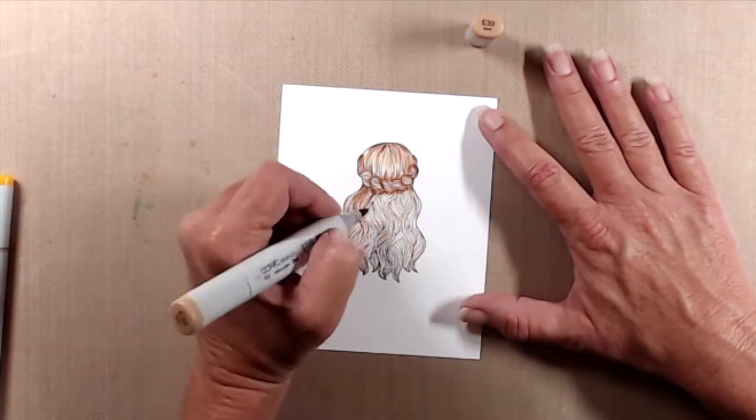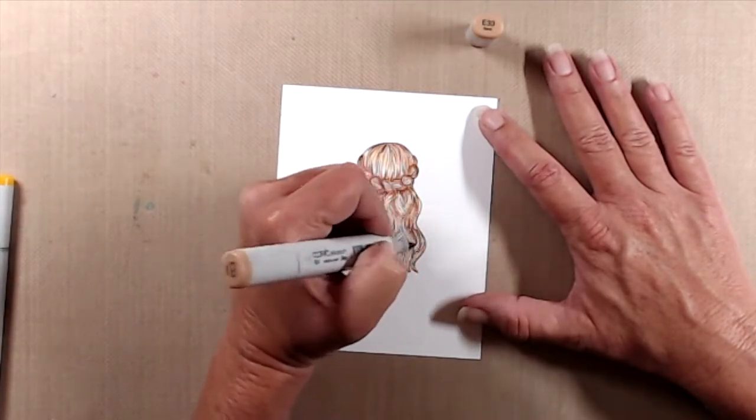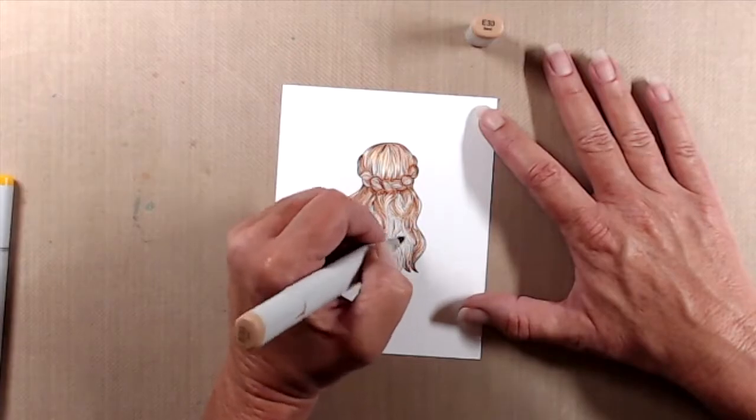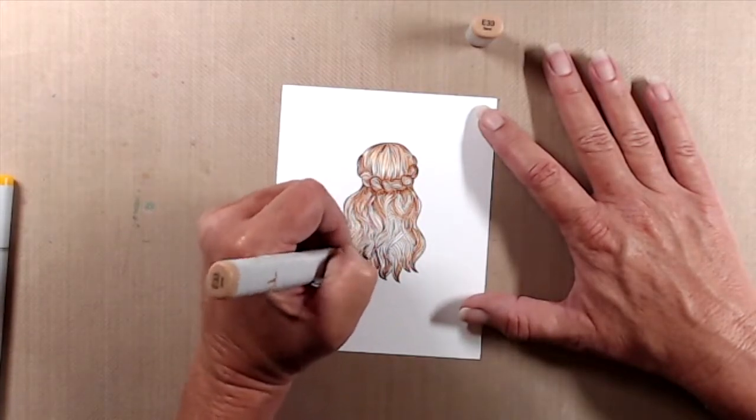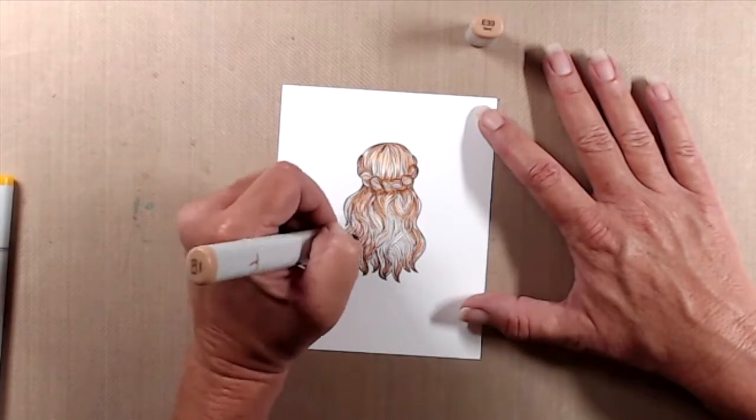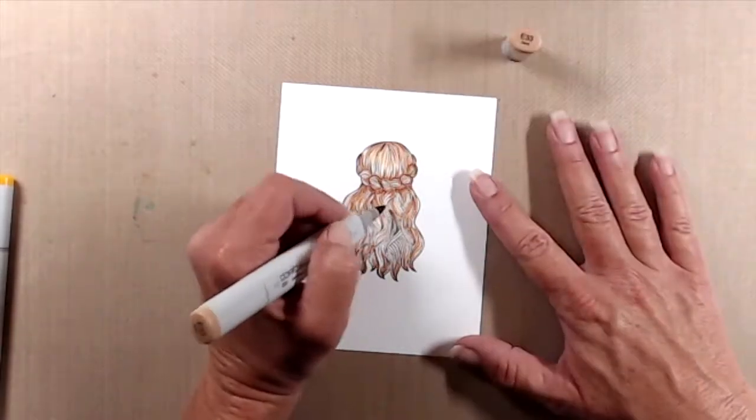Then I came in with E33 and just started to do a flicking motion. I did it from the very top of her head down just a little bit, maintaining that highlight and the center highlight. Then I traced around the braid with that just so I could see the detail a little bit better for my coloring.